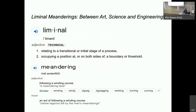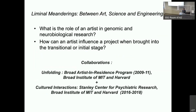What do I mean by liminal meanderings? Liminal refers to a transitional or initial stage of a process, occupying a position at or on both sides of a boundary or threshold, while meandering refers to following a winding course. For today's lecture, we will focus on these two questions: What is the role of an artist in genomic and neurobiological research? How can an artist influence a project when brought into the transitional or initial stage?